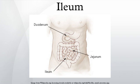The ileum is the part of the small intestine that is a continuation from the jejunum. The ileum is surrounded by mesentery. It connects with the cecum, the first part of the large intestine, at the ileocecal junction. There is no clear line of demarcation between the jejunum and the ileum.